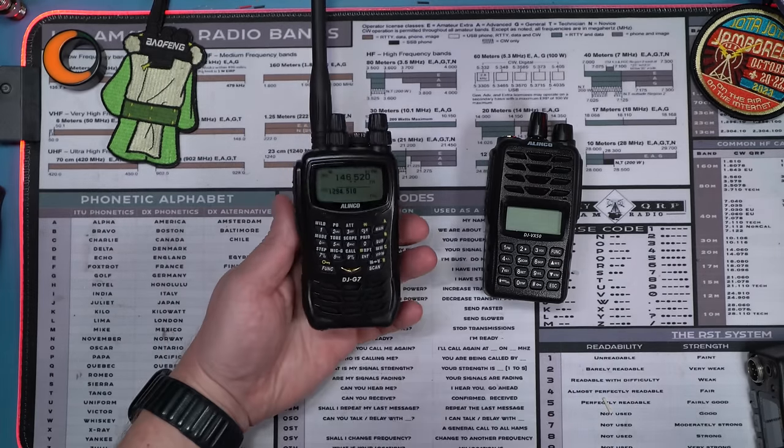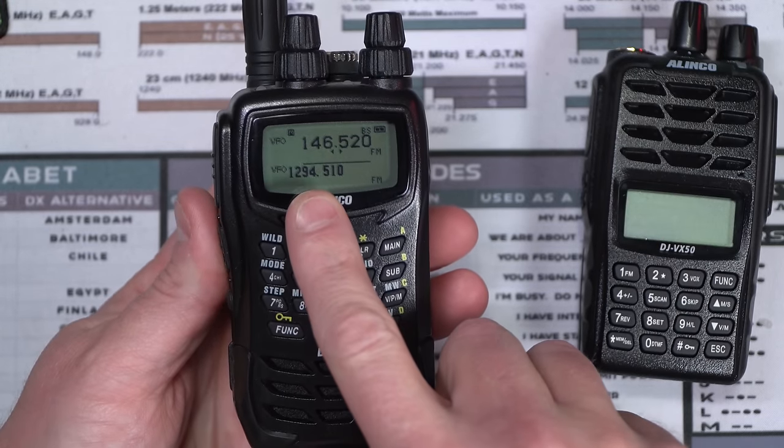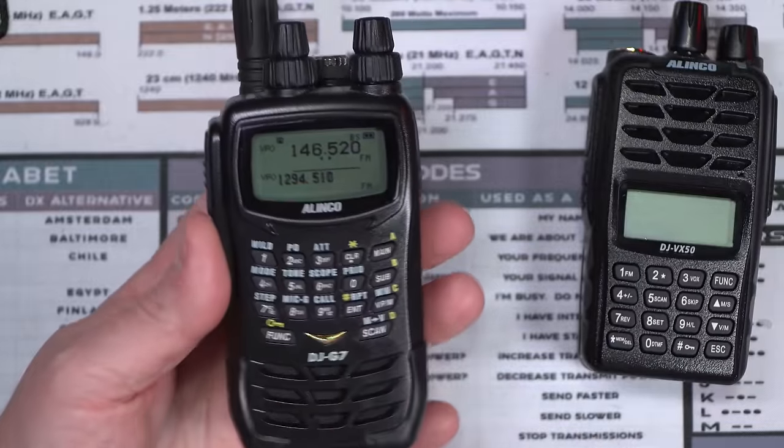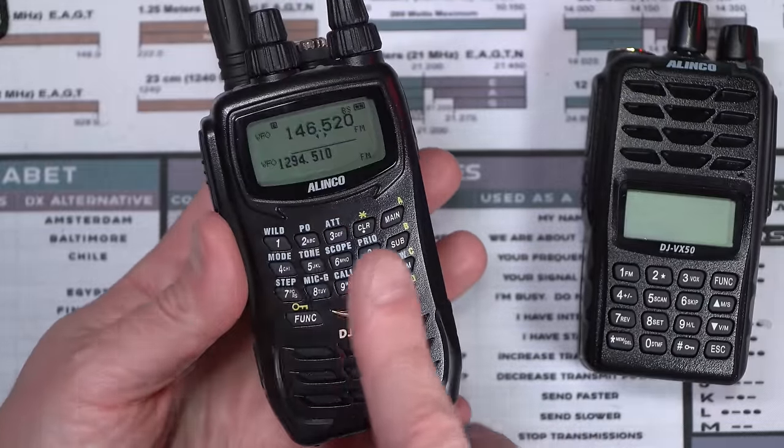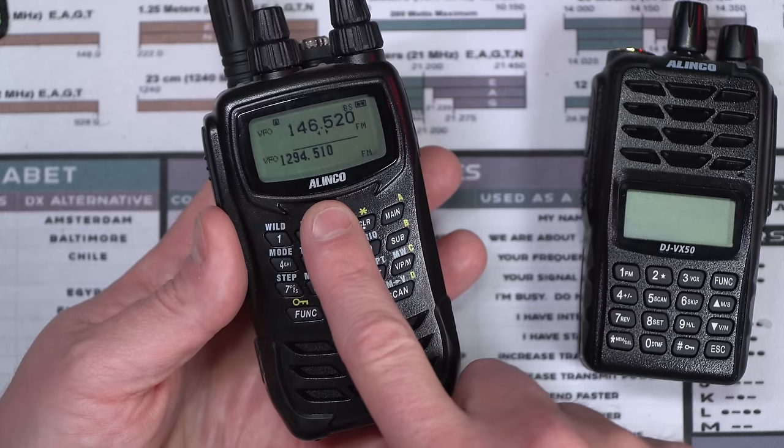Dual band, but what are the bands of operation? Well, two meters and how about 1.2 gigahertz in a handheld? They made a version of this that also had 900 megahertz. Not many radio companies do the quirky things that Alinco does, the weird things that Alinco does.